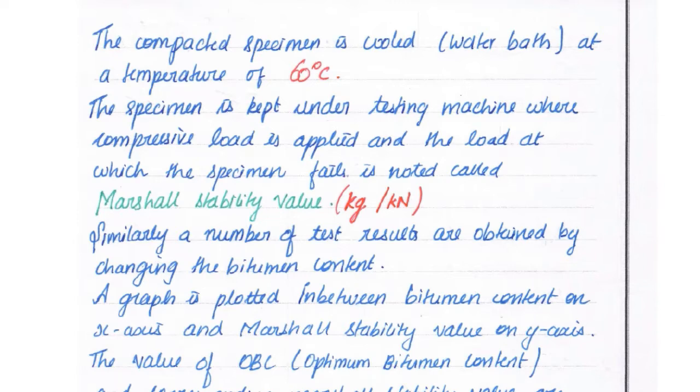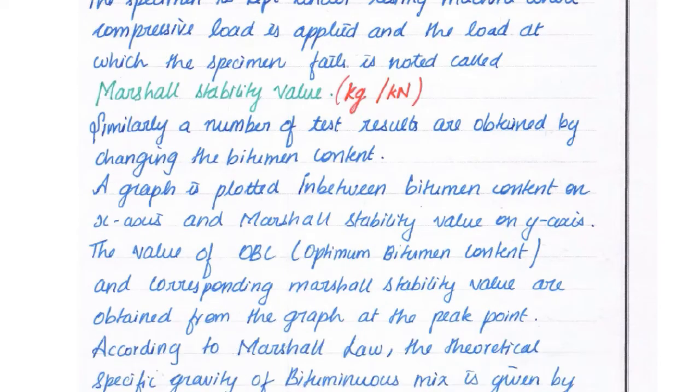The specimen is kept under testing machine where compressive load is applied, and the load at which specimen fails is noted, called the Marshall Stability Value in kilogram or kilonewton.